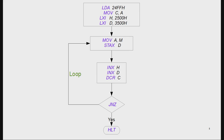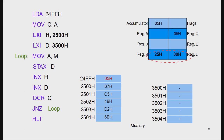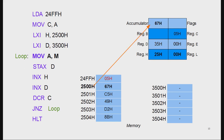Visual explanation: the first line LDA 24FFH loads the value 05 into the accumulator. The next line copies the accumulator value 05 into register C. LXI H loads the HL pair with 2500H, so the HL register pair is now pointing to address 2500H.